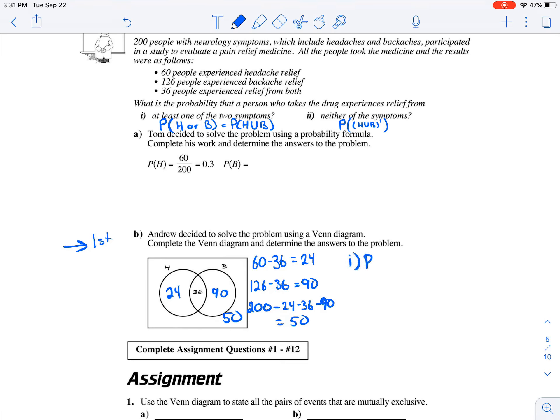And now as soon as we have our Venn diagram filled out, it's going to be easy to find the following probabilities. Headache relief or backache relief, going back to set theory, that's going to be the union of those two sets. So we'll add up 24 plus 36 plus 90, divide that by our total, 200, and we end up with 0.75, or 75% of the people will experience either headache relief or backache relief or both.